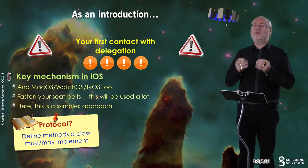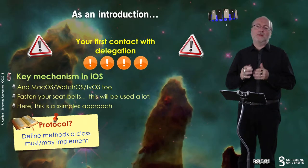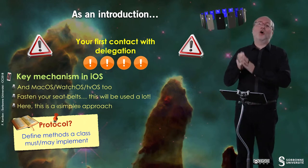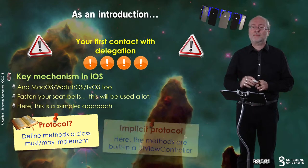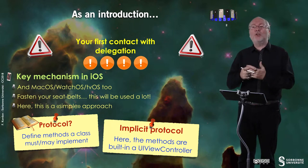A protocol is a way to define a set of methods that a class must or may implement. Some of these methods are mandatory and the class must implement them, and some are optional so the class may not implement them. It's a bit like interfaces in Java, more or less. Here the protocol is implicit since it stands as a built-in way in a UIViewController.